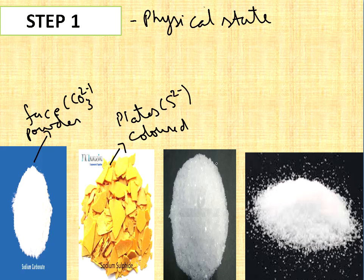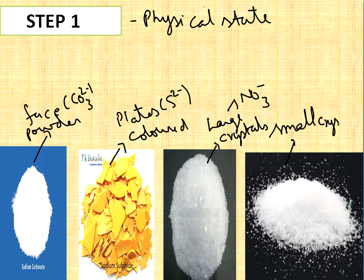Next, if it has broken plates and colored, then it will be sulfide, S2-. Next, if large crystals are there, like stones, it will be nitrate. There is probability of having nitrate.